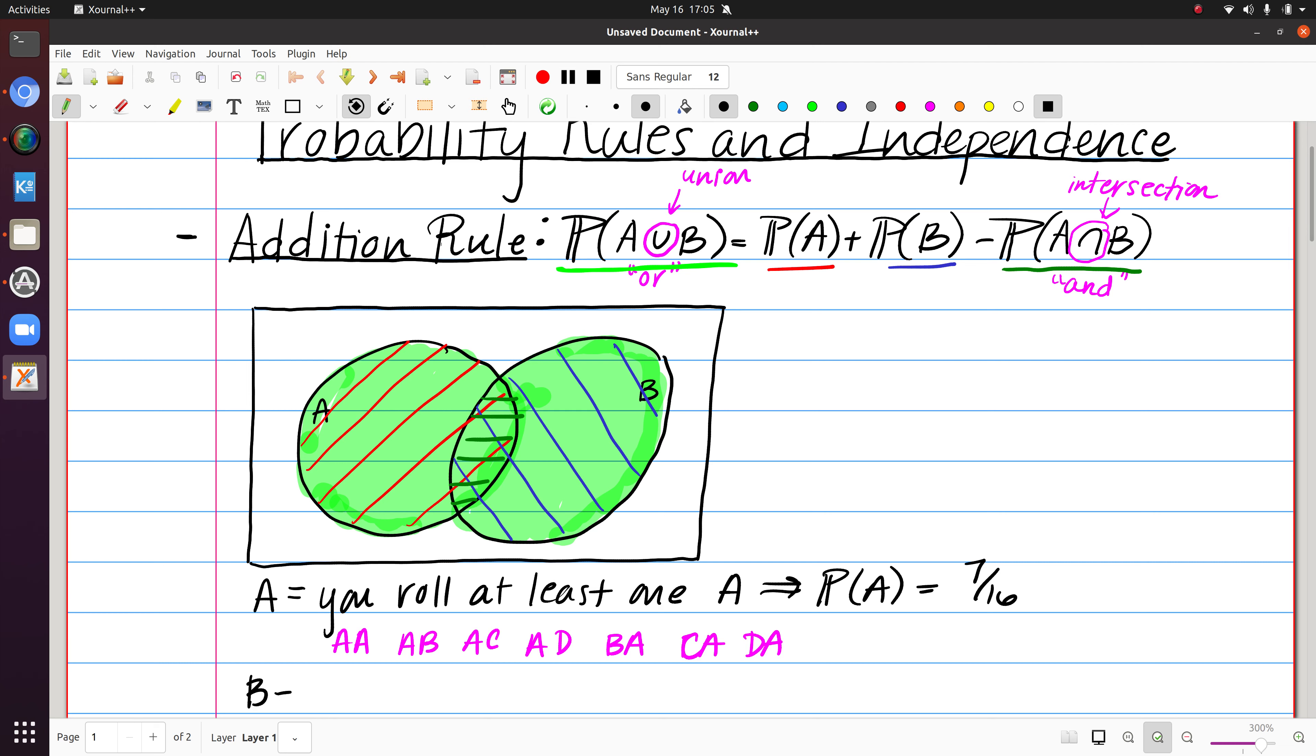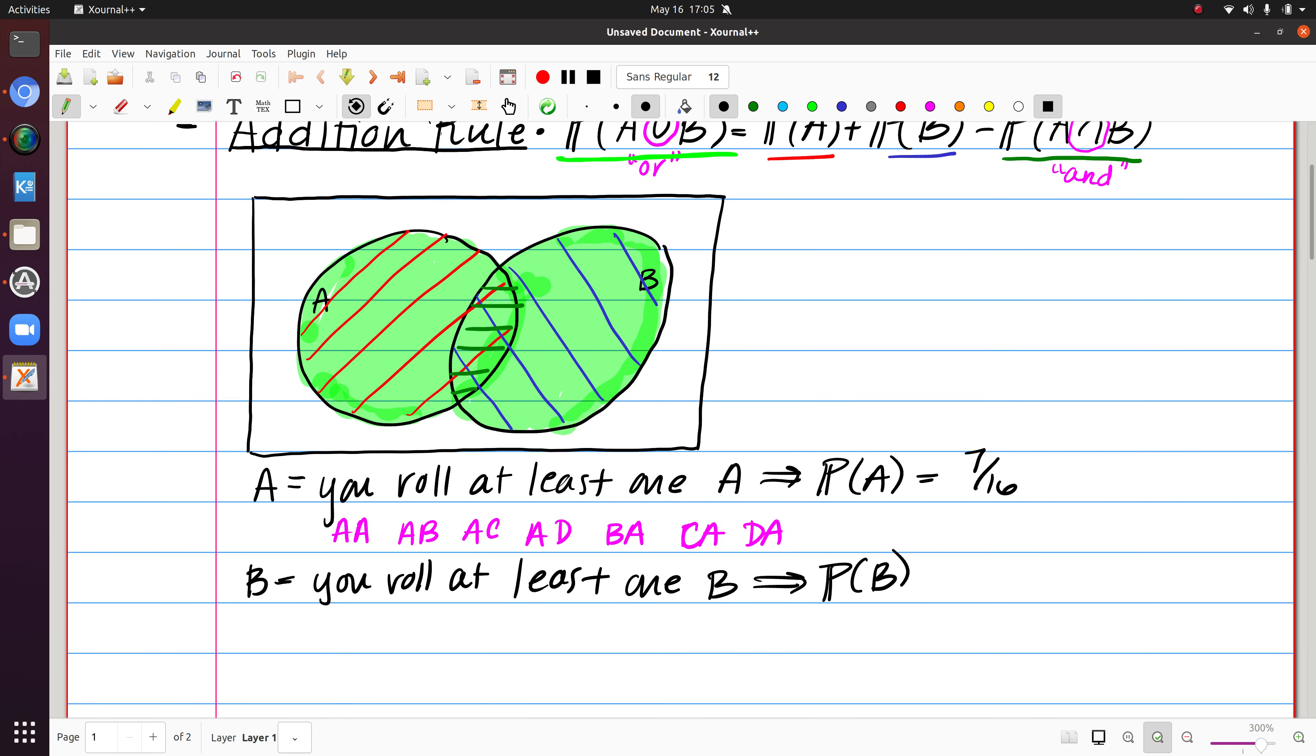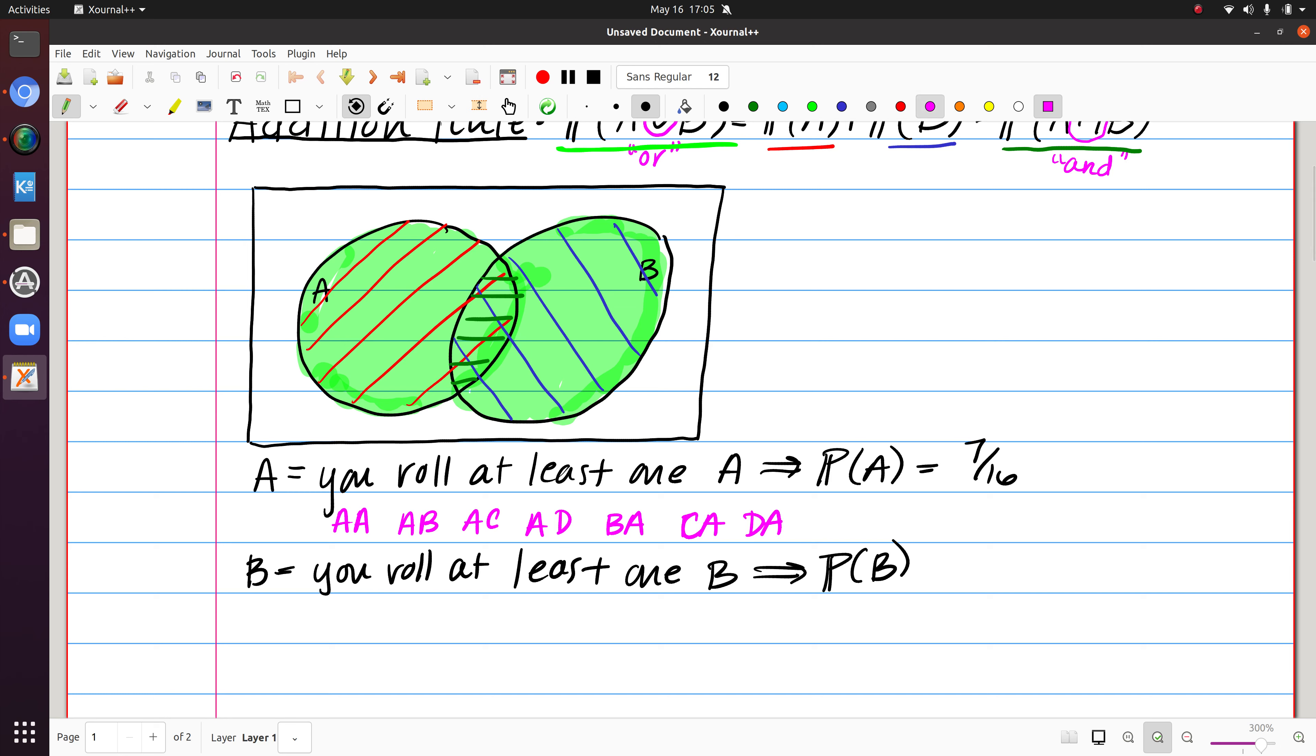And then if we let B be the event that you roll at least one letter B, and then we think about finding the probability of B. Again, I can list out those outcomes. That would include B, A, B, B, B, C, and B, D, but also A, B, C, B, and D, B. And we get that the probability there is 7 sixteenths.